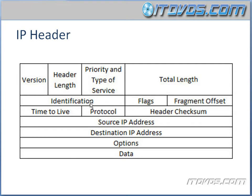Identification contains unique IP packet values used to differentiate fragmented packets from different datagrams. Flags specify whether fragmentation should occur — fragmentation is when a packet gets broken up into smaller packets. Next is fragment offset, which provides fragmentation and reassembly if the packet is too large to put in a frame and has to be fragmented. It also allows for different MTUs on the internet. MTU stands for Maximum Transmission Unit, which is normally 1500 and specifies the maximum size of the transmission unit.